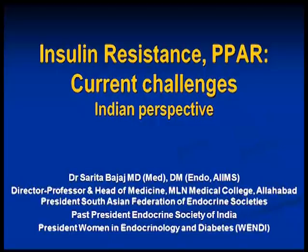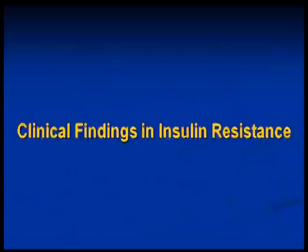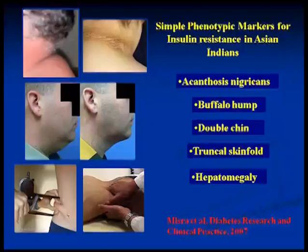Here we have about 65%, and this is now from Anoop's data. The clinical findings in insulin resistance — these are simple phenotypic markers for insulin resistance in Asian Indians. Number one: acanthosis nigricans.